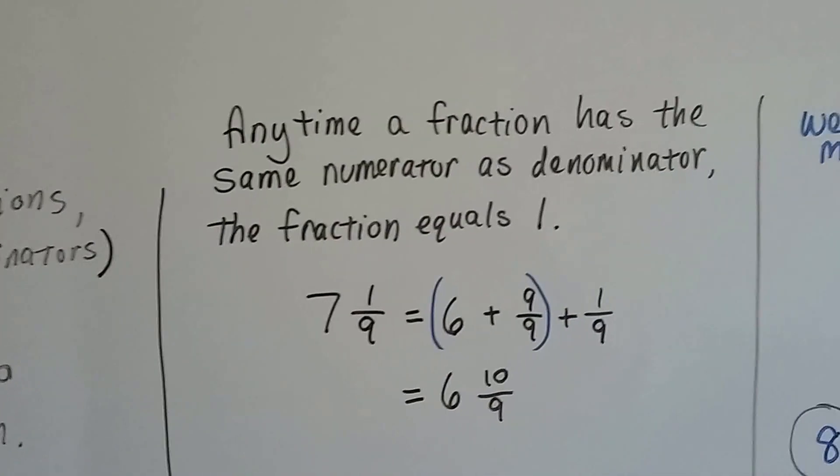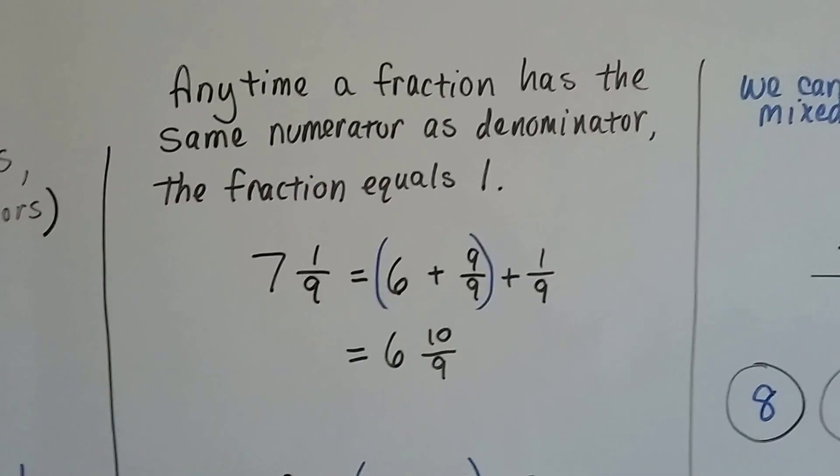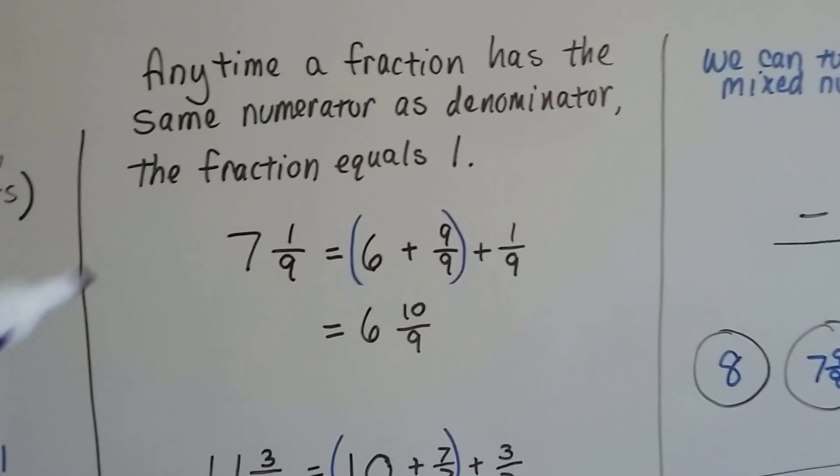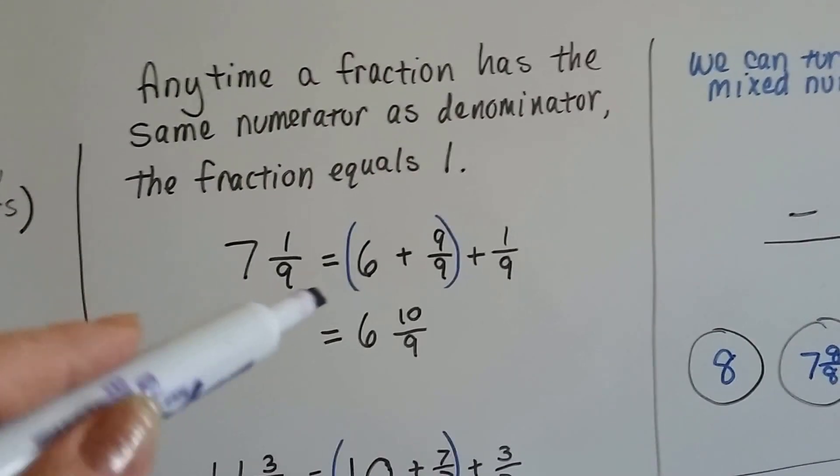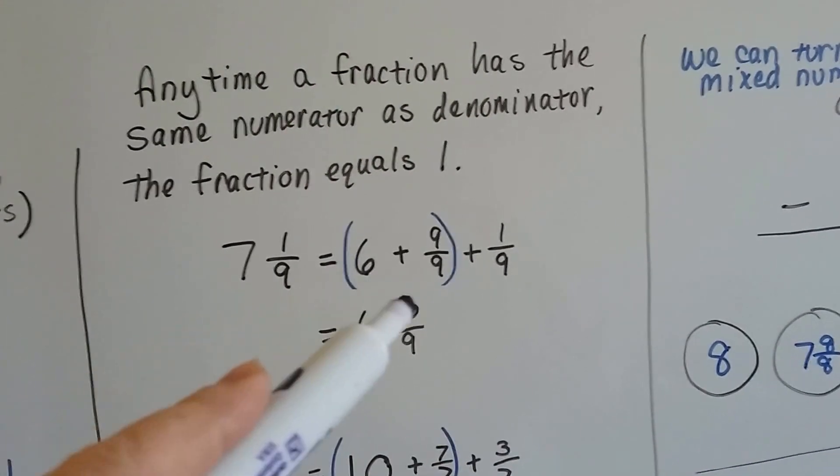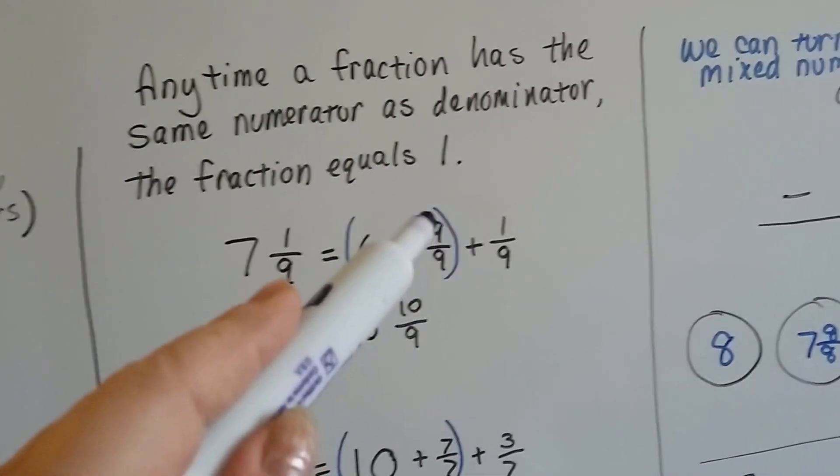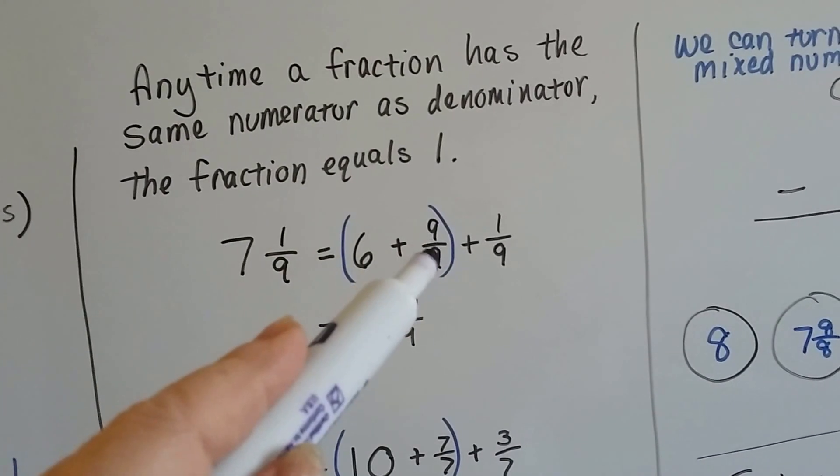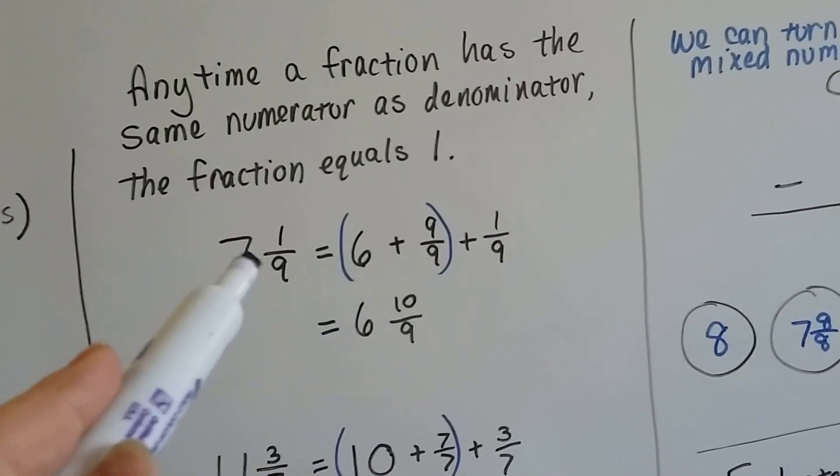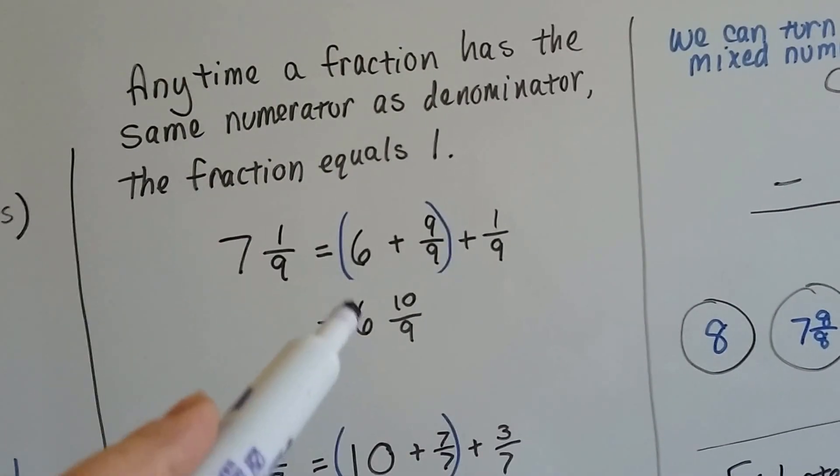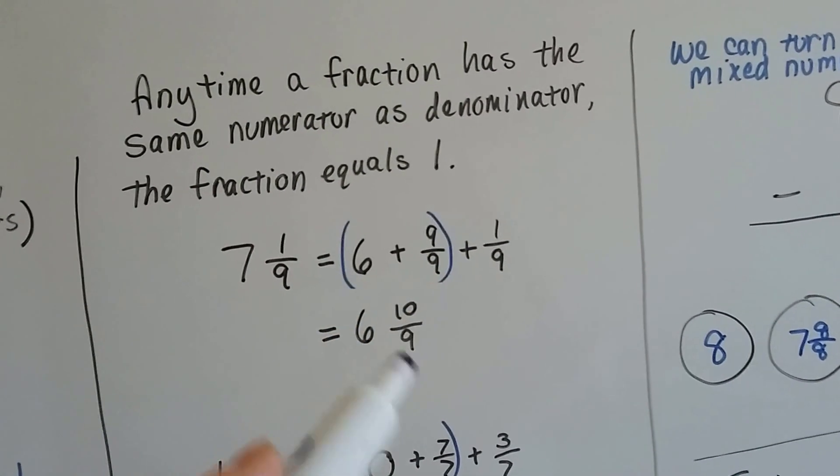Anytime a fraction has the same numerator as denominator, it equals 1. So if we have 7 and 1 ninth, we could turn it into a 6, and then the 9 ninths that we pulled out of it, that is the whole one, and then we have that 1 ninth that was originally there. So that gives us 6 and 10 ninths.